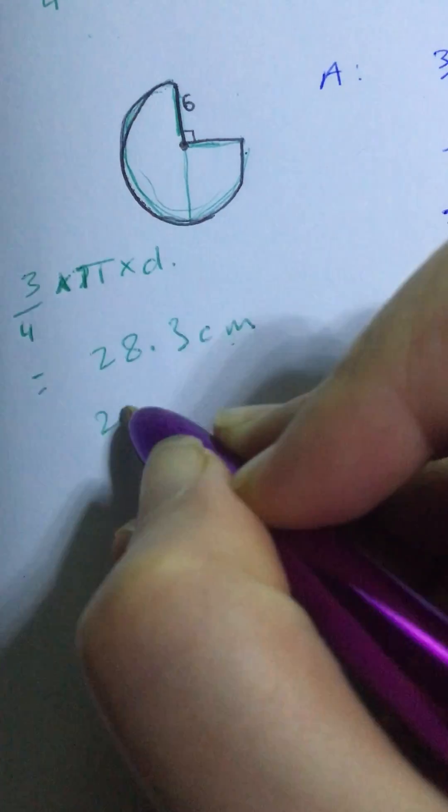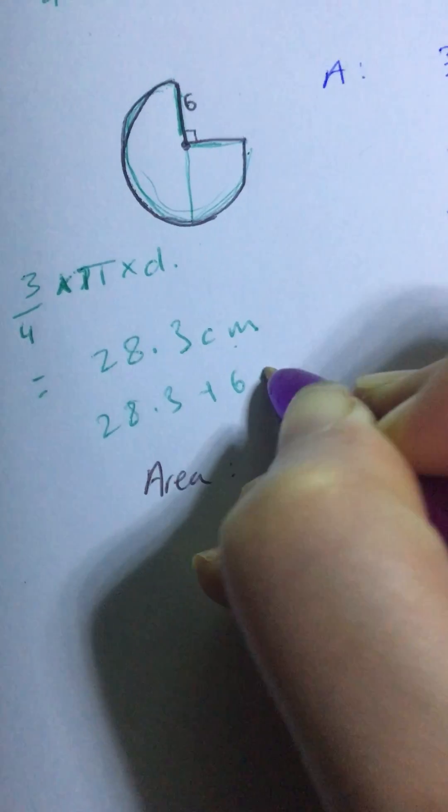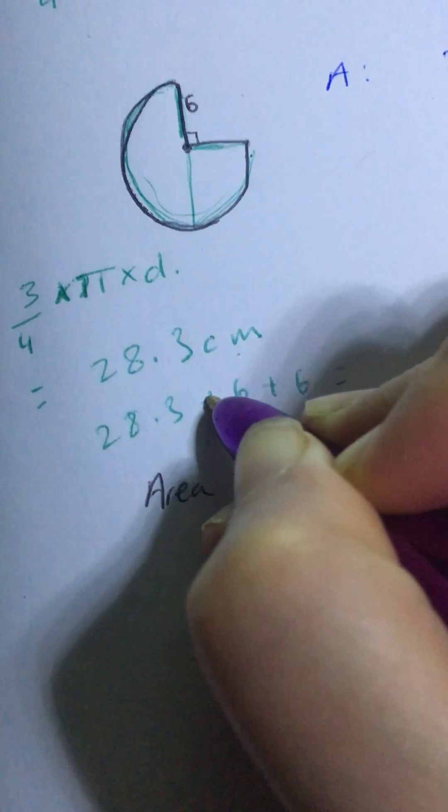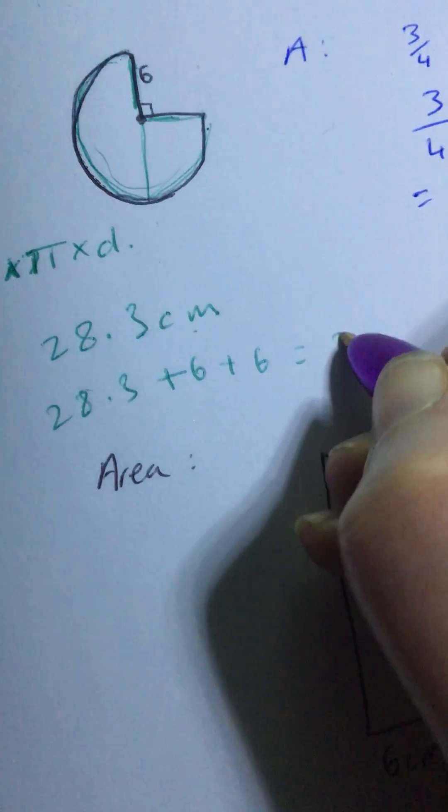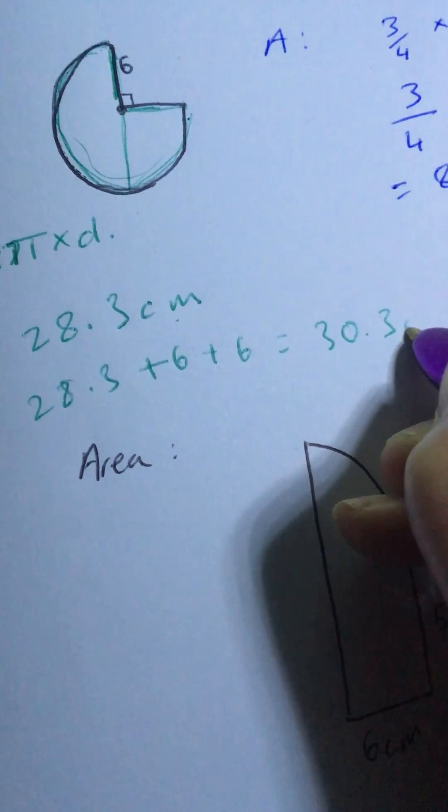So I'm going to do 28.3 plus 6 plus 6 again. So 28.3 plus 12 would be 40.3 centimeters.